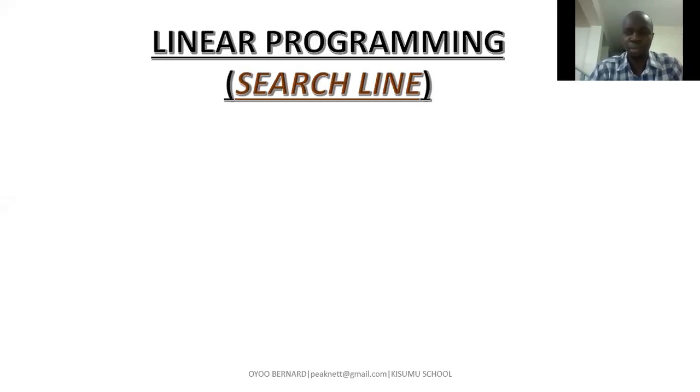As you saw in the previous video, we drew the feasible region and then picked all the possible points within the region, tested, and then we got our maximum value. In this case, we were supposed to get the maximum profit that the company was likely to realize. So we chose a particular point from all the possible points, substituted the values for x and y and obtained that.